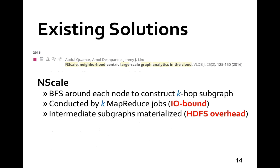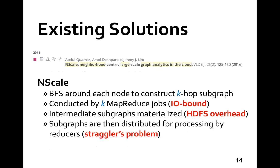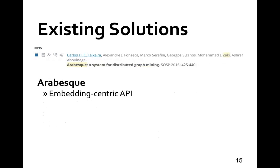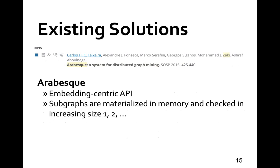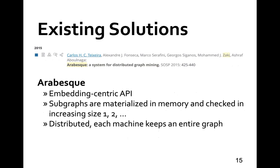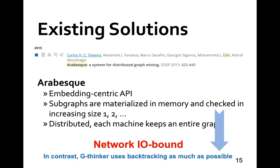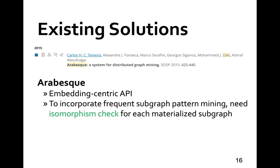The subgraphs are then finally distributed for concurrent mining with another MapReduce job, which suffers from the curse of the last reducer. Arabesque proposes a user-friendly embedding-centric programming interface for graph mining, where an embedding is a materialized subgraph grown in increasing size for checking. Arabesque is a distributed system where every machine needs to keep an entire data graph in memory, and the subgraph materialization makes it network I/O bound. In contrast, our G-Synker uses node-backtracking in serial mining algorithms as much as possible to avoid the cost of materializing subgraphs.